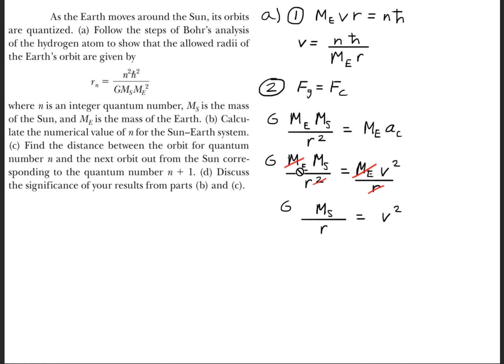We can cancel the mass of the Earth on both sides of the equation, and one of the r variables on both sides, so it gets reduced down to this form.